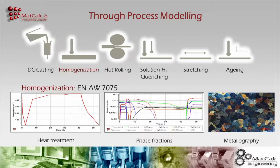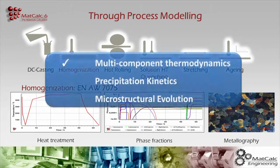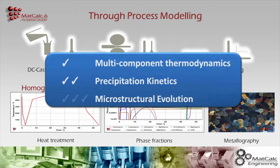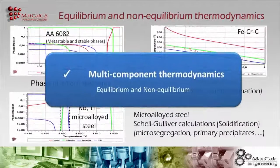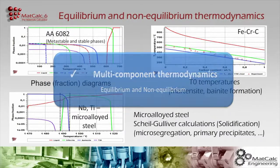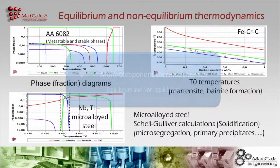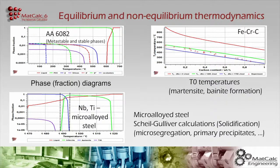MATCALC 6 models the whole materials design and fabrication process, covering the three main areas of multi-component thermodynamics, precipitation kinetics, and new in MATCALC 6, microstructural evolution. The powerful thermodynamic engine of MATCALC builds the foundation for all kinetic simulations by providing precipitation driving forces and multi-component chemical potentials. It also supports calculation of equilibrium and non-equilibrium phase stabilities and transformation temperatures, and provides an implementation of the Scheil-Gulliver model for solidification.